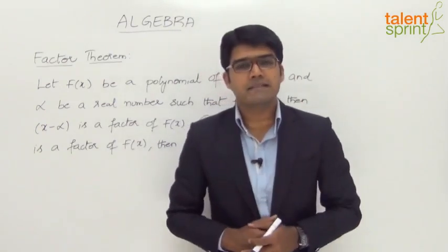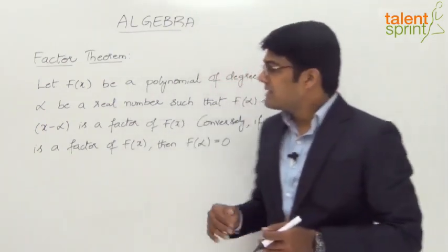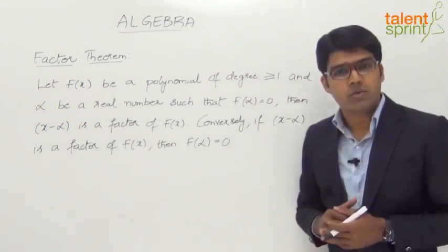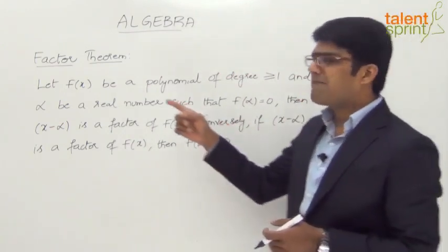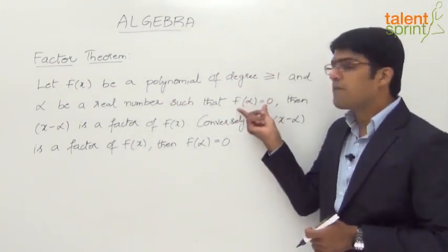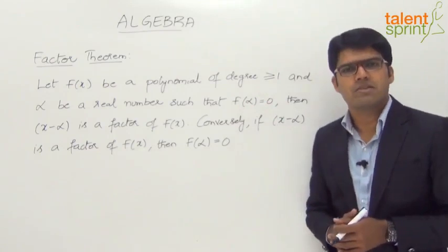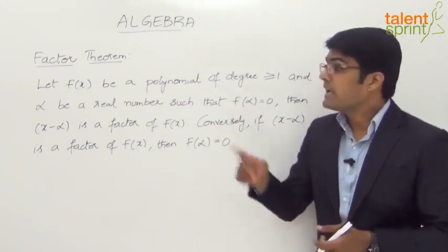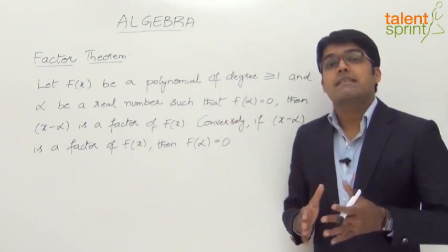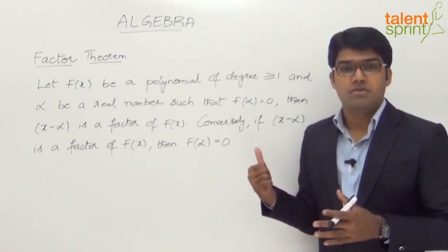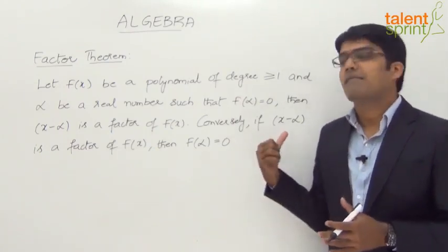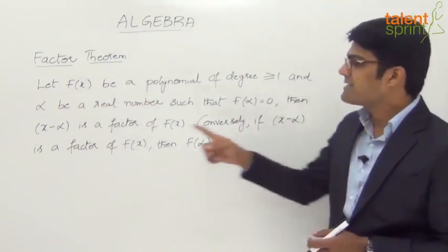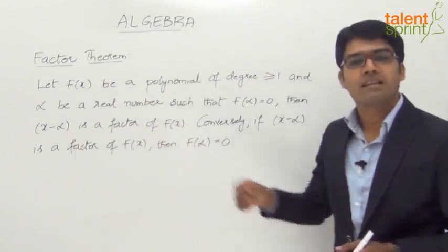Having learned about the remainder theorem, let us now look at the factor theorem. The statement says that if f of x is a polynomial of degree greater than or equal to 1, and alpha is any real number such that f of alpha is equal to 0, then x minus alpha will be a factor of the polynomial f of x.